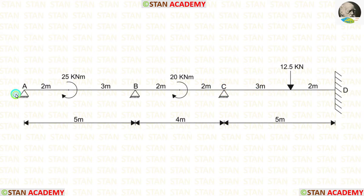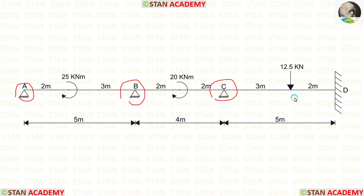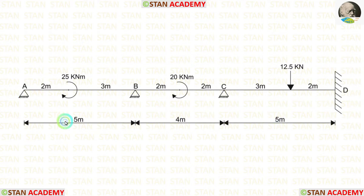At points A, B, and C, there are hinged supports. At point D, there is a fixed support. Span AB is 5 m long, span BC is 4 m long, and span CD is 5 m long.